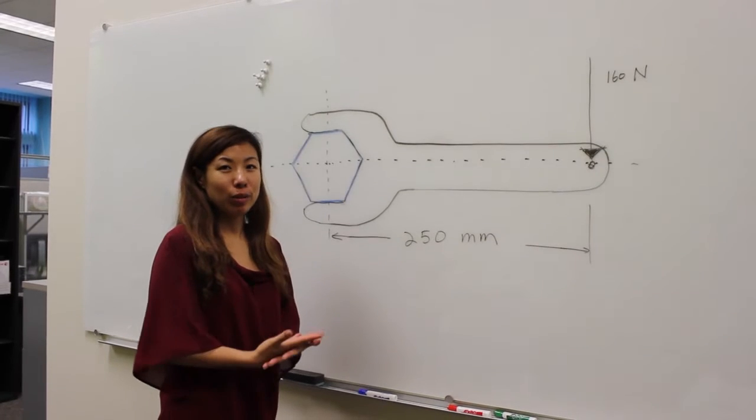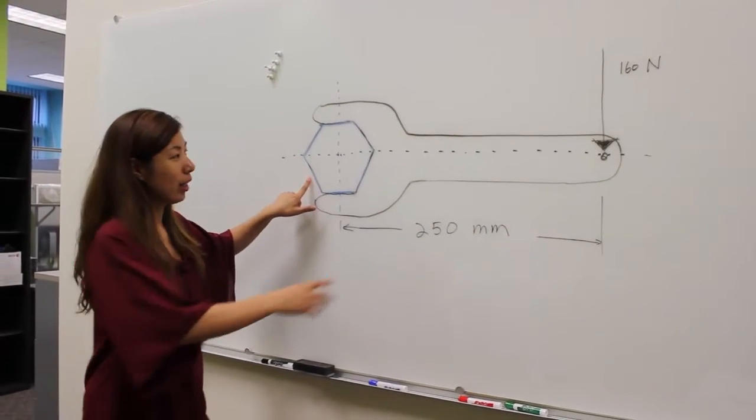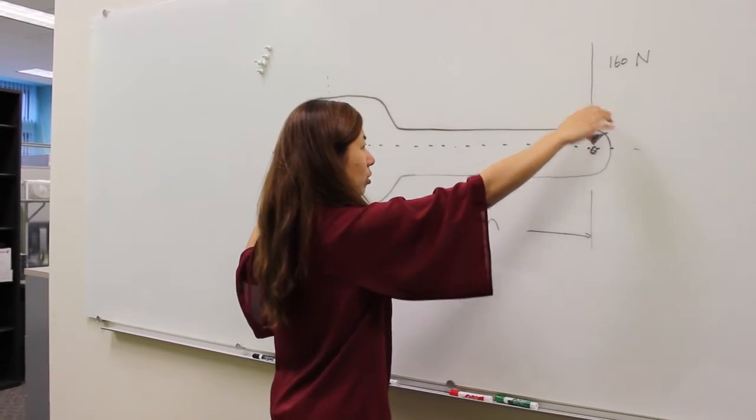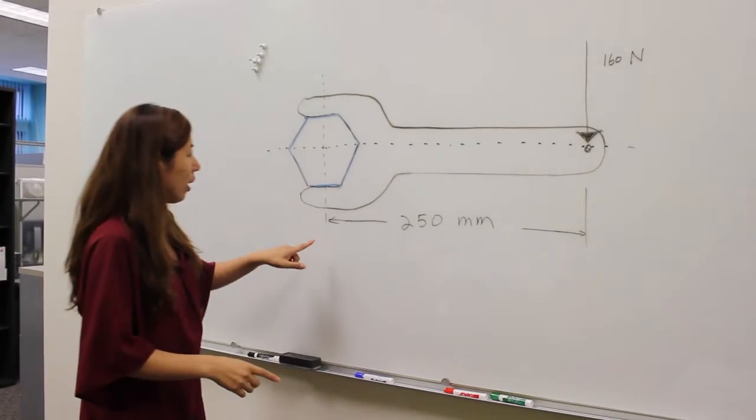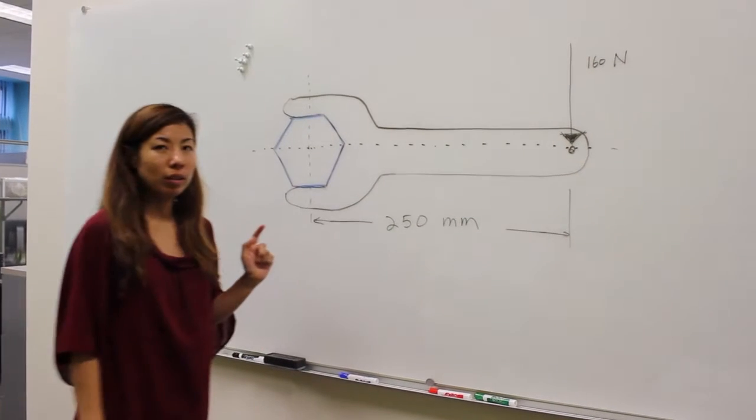We're going to do a demonstration of how the right-hand rule works. This is a hex bolt with a wrench applying 160 Newtons of force downward, and the distance between the pivot point and where the force is applied is 250 millimeters.